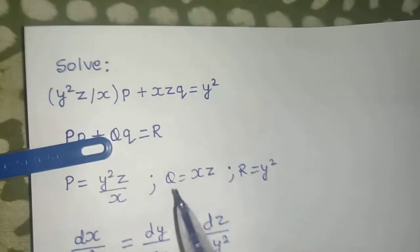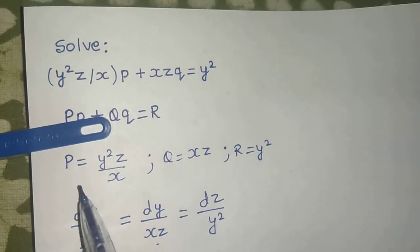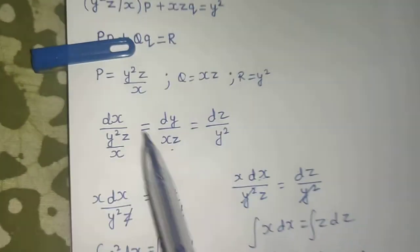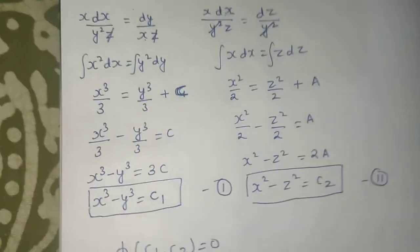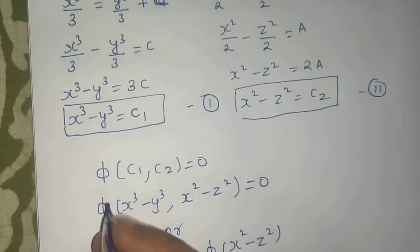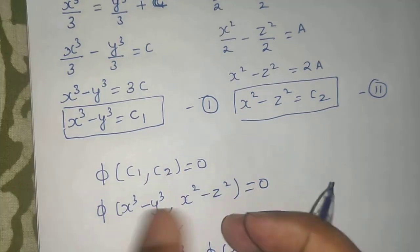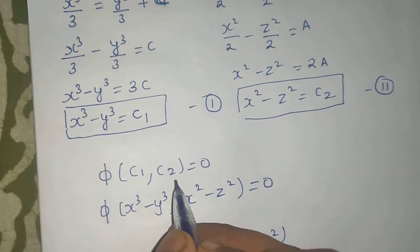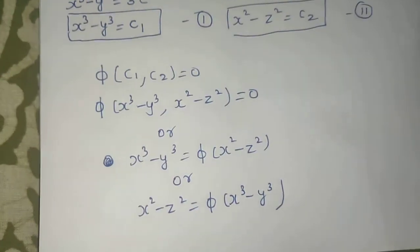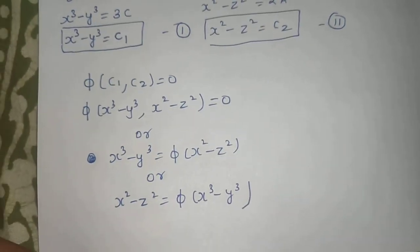I hope you understood. First method, first thing was to find P, Q and R, then the auxiliary equation, then equate two at a time to get your constant. Final answer is phi which is an arbitrary function, phi of C1 comma C2 equals to 0. This is it. I hope you understood it. Thanks and have a very nice day.